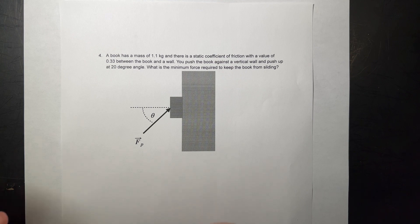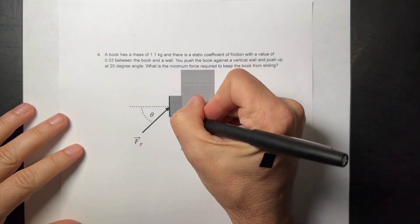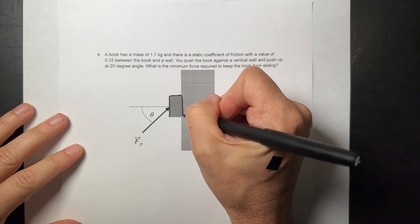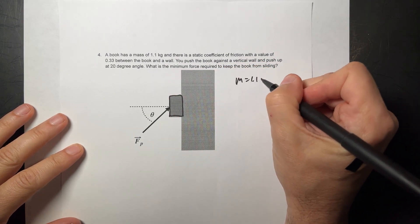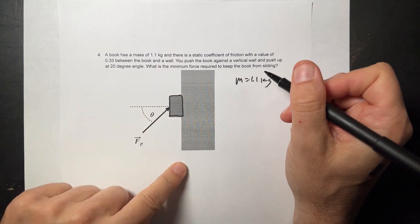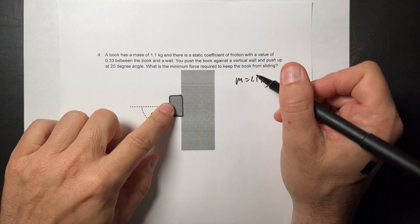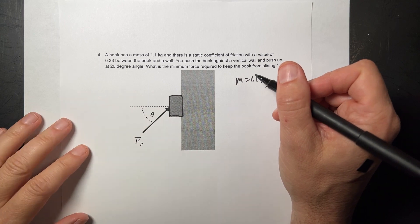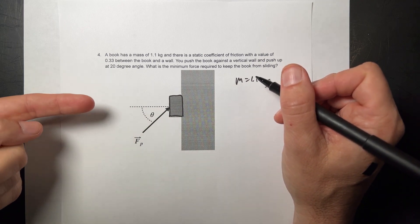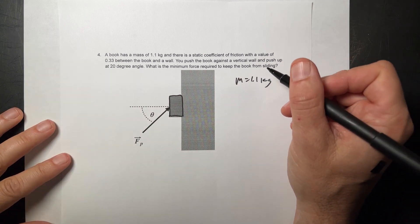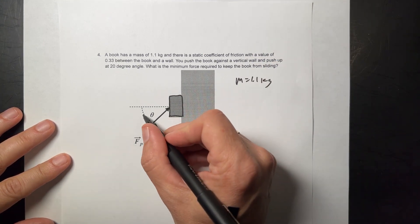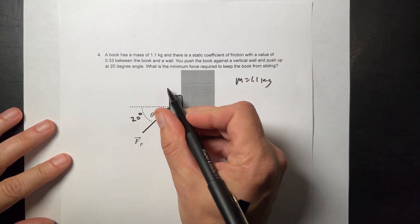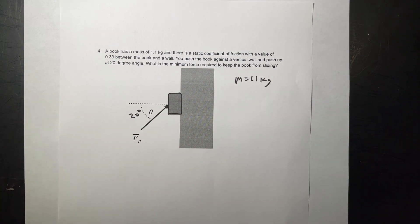The picture's not perfect. I have here a block, 1.1 kilograms, and it's up against a vertical wall, and I'm pushing at an angle theta with respect to the horizontal. So pushing it this way, theta would be zero. So if I push up with a 20-degree angle, so this is 20 degrees, what force would you need to keep that block there?